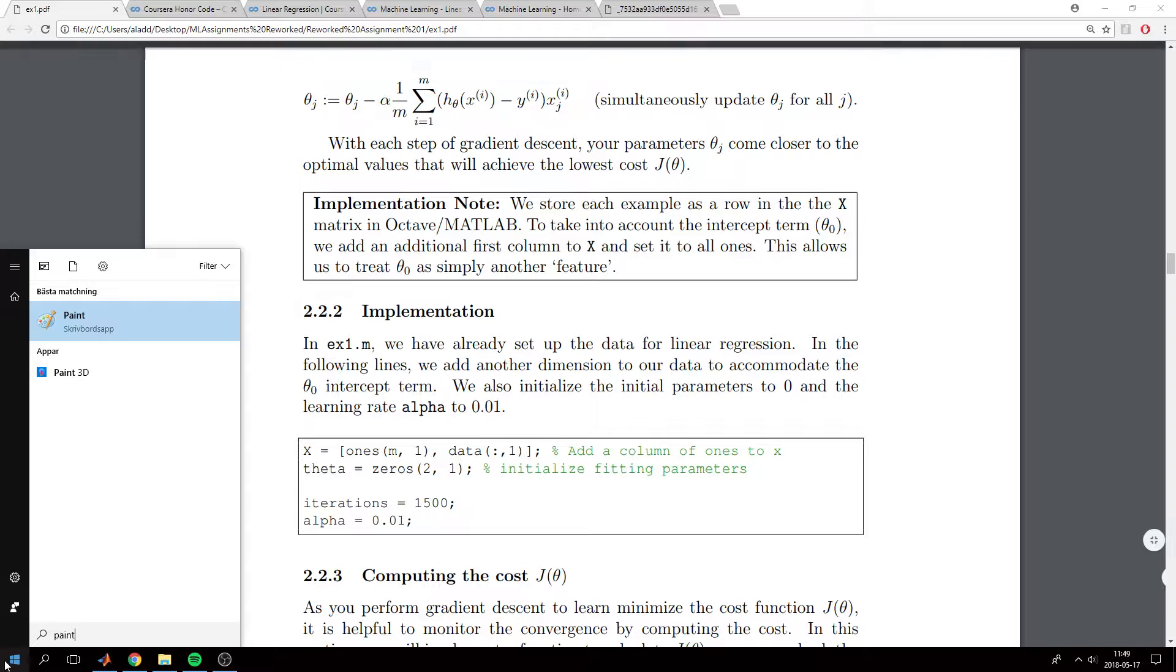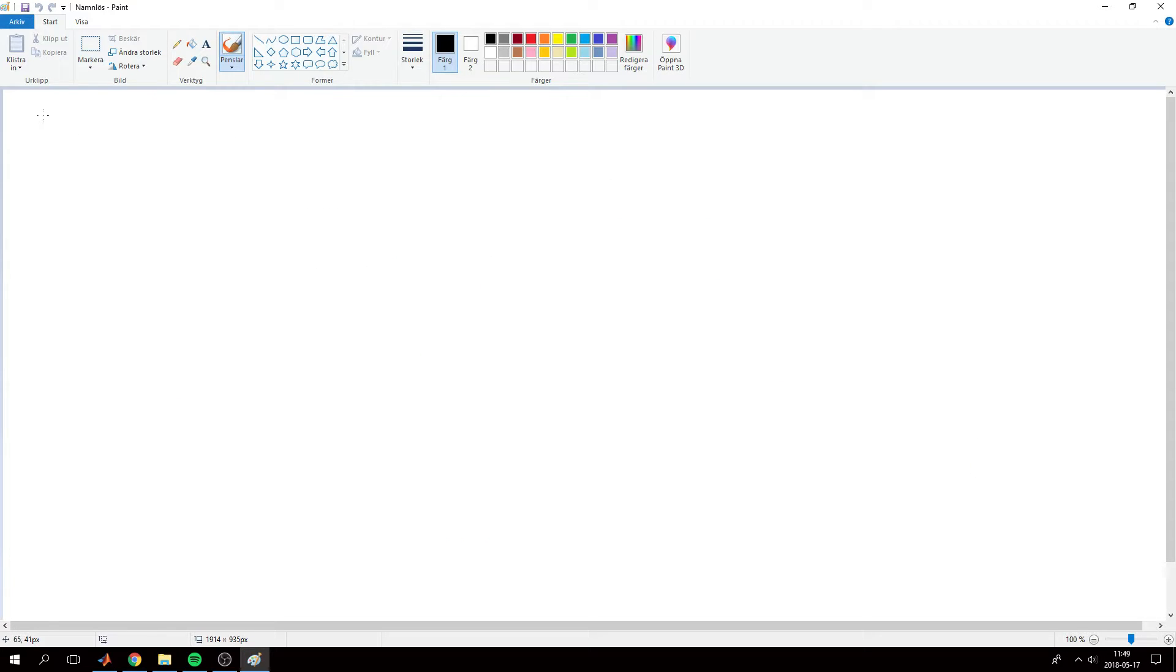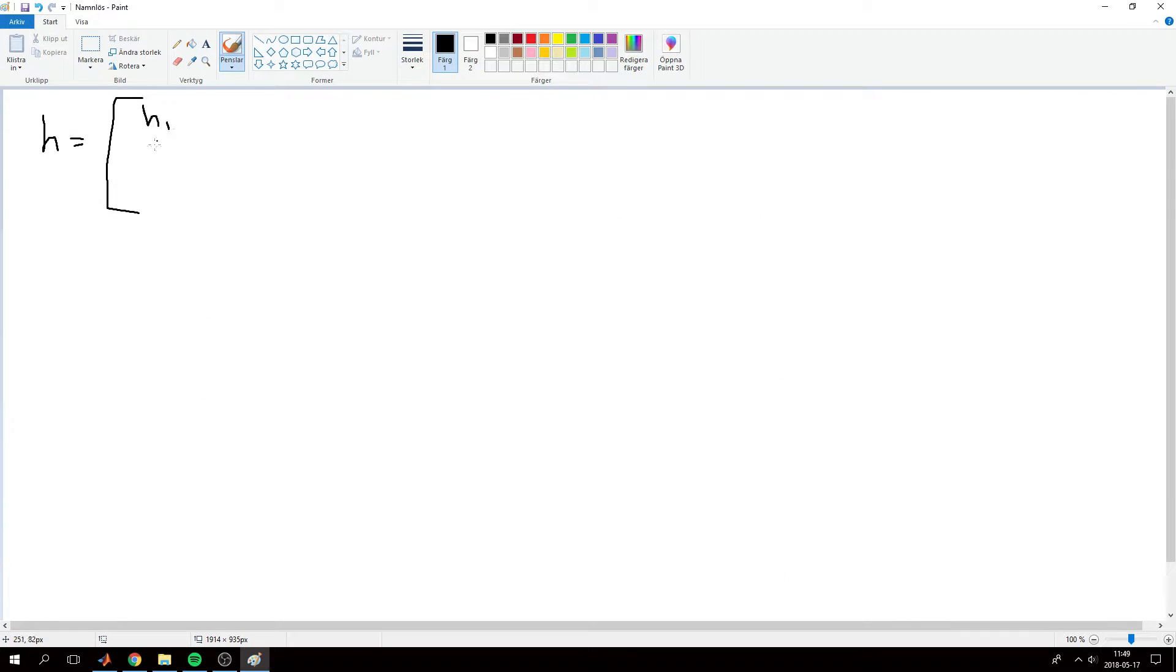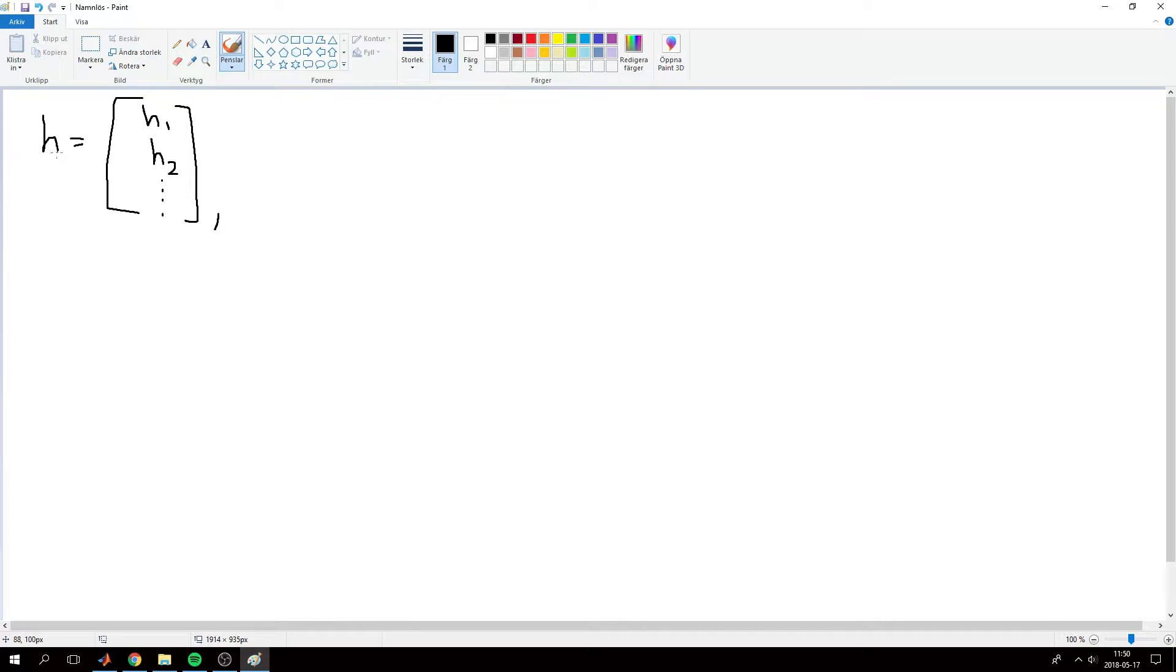First, we know from the last video that h will be a 97 by 1 vector, which will be h1, h2, and so on. This is our predicted value h_theta of x given our current theta. And y will be the accurate value, also a 97 by 1 vector.